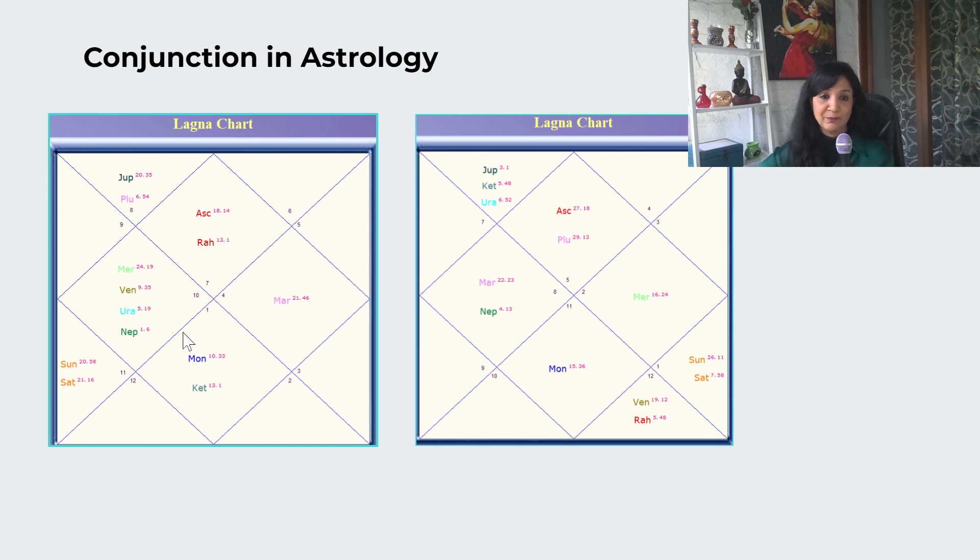Here Sun is eleventh lord. This is very important: to understand the lordship, the significance and lordship. This changes the entire game. Saturn is fourth and fifth lord, Yogakaraka planet. Eleventh lord in fifth house, so Sun is having impact on Saturn. This is helping: eleventh going to fifth house, this is Dhan yoga. So if Sun has less degrees and Saturn has more, it is good. It depends on lordship.